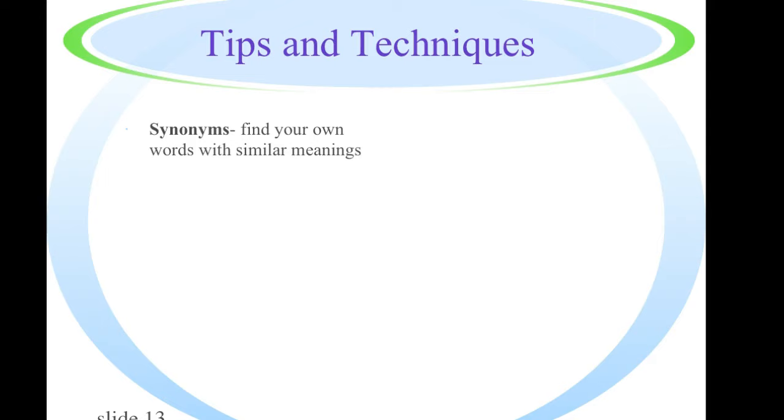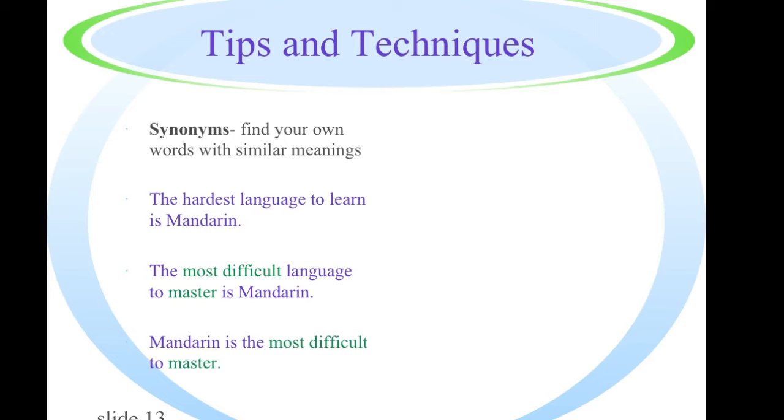Now there are some tips and techniques that you can use when you are creating paraphrases. This first set of tips and techniques I'm going to give you, please understand, is only a starting point. So when you want to express things in your own words, sometimes you can use synonyms, words that have similar meanings. So if the original statement is the hardest language to learn is Mandarin, a restatement or a paraphrase might be the most difficult. So we're finding that most difficult is a synonym for hardest. And learn has a synonym in master. Mandarin is the most difficult to master would then be an appropriate paraphrase of that particular thought.